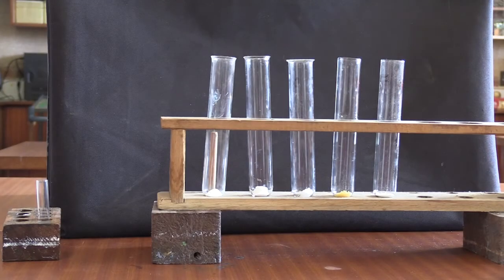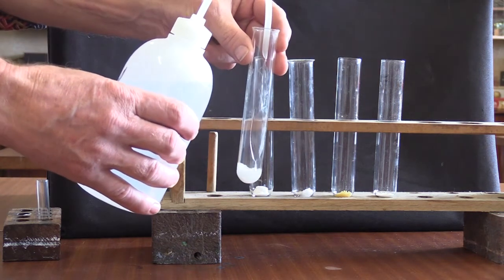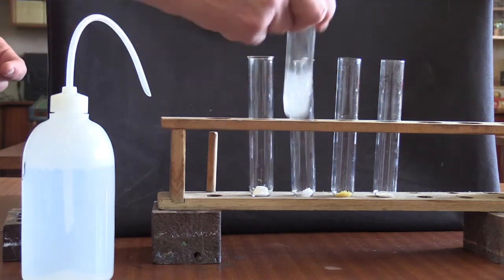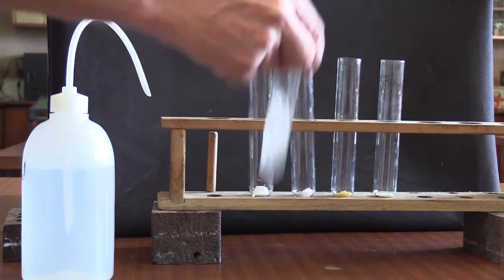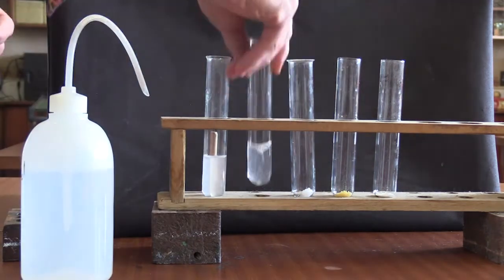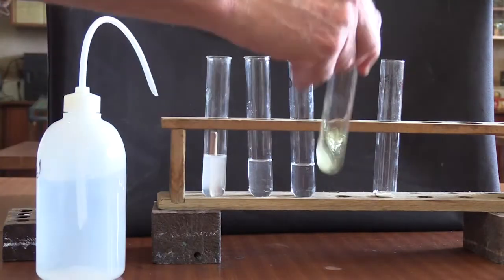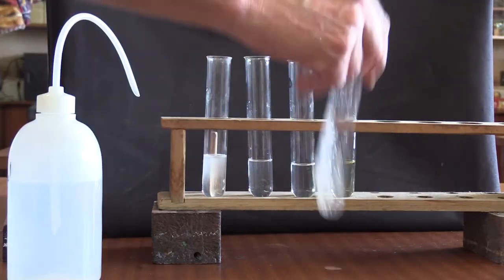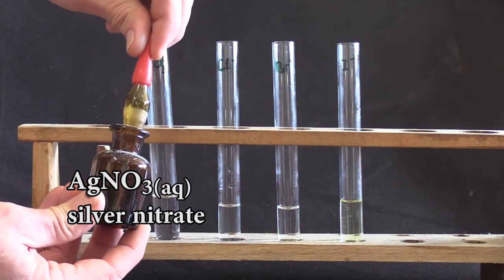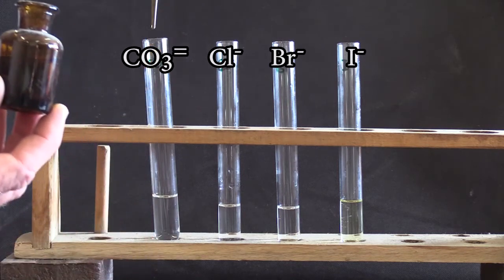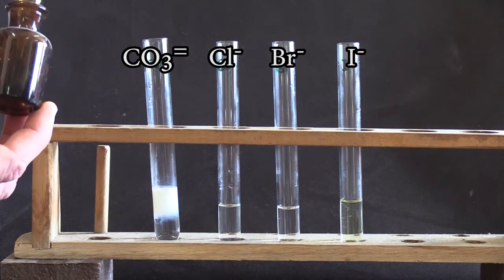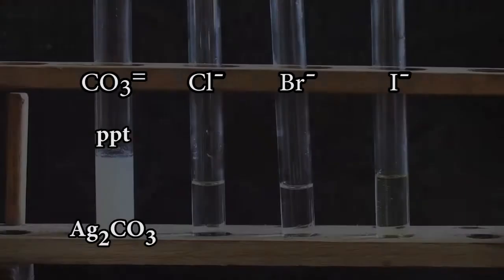Some other reactions. Here we have potassium carbonate. The reason for only using the bottom third of the test tube is that we can shake it quite vigorously and get them to dissolve. And here we have the halides and finally sulfates. Silver nitrate. We add a few drops of silver nitrate to the potassium carbonate and we see this white precipitate of silver carbonate.